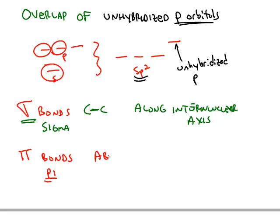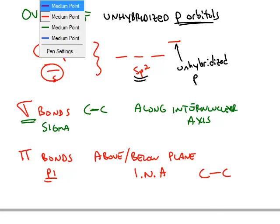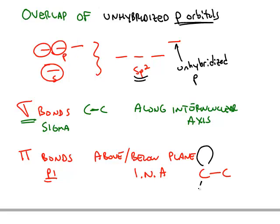And this is either above or below. It's both above and below the plane of this internuclear axis. So here is our sigma bond in red. And then the pi bond is one bond.